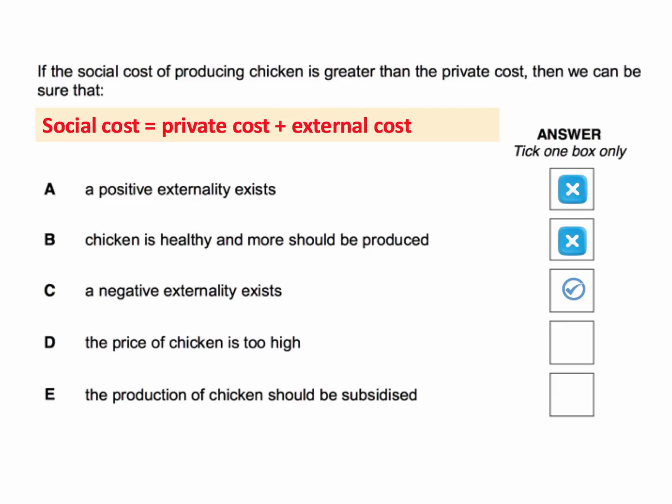Is the price of chicken too high? Well, probably not. If there are external costs, then the price could actually be higher to take into account the externalities. Should the production of chicken be subsidised? Well, not necessarily if there are negative externalities in production — if anything, there should be a tax on producers.